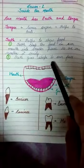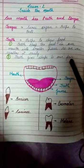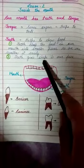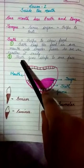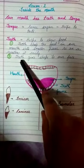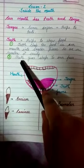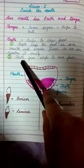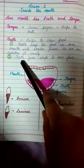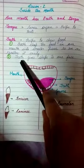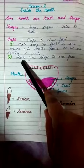Next: teeth give shape to our face. Humarey face ko shape deta hai teeth. Agar aapne dekha hoga, joh old people hote hai, jinke mouth mein teeth nahi hote hai, to unka face jo hai woh kaafi, baad mein thoda sa ugly look deta hai.